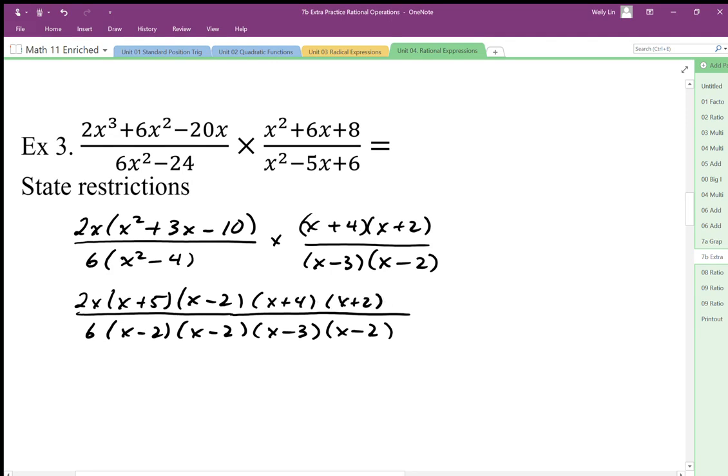Before I cancel, I'm going to state my restrictions. We have difference of squares, so when one needs to be minus, one needs to be plus. So x is not equal to 2, negative 2, and 3. We don't have to worry about the numerator for restrictions because the numerators can be equal to zero. It's just the denominators - we can't divide by zero.